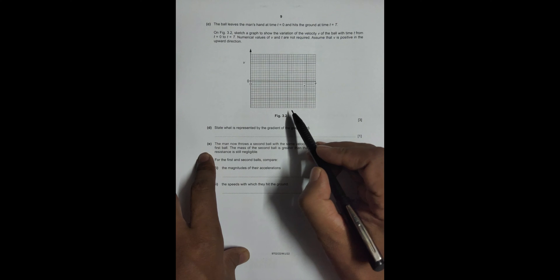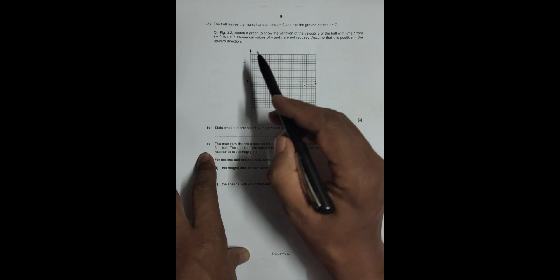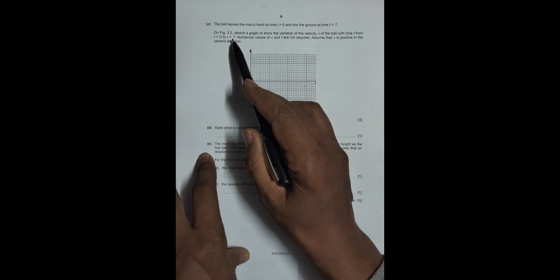Now, the ball leaves the man's hand at time t equals 0, of course, and hits the ground at time t equals T, some specific time T. On figure 3.2, sketch a graph to show the variation of velocity v of the ball with time t from t equals 0 to t equals T. Numerical values of v and t are required.